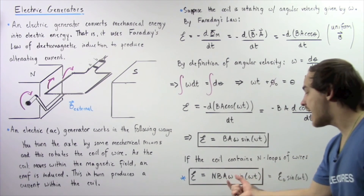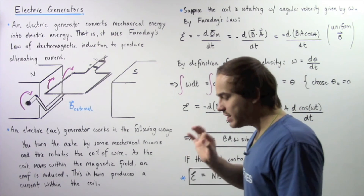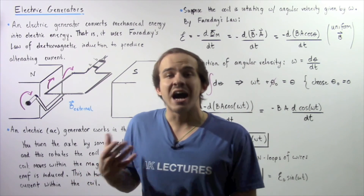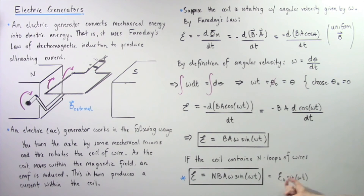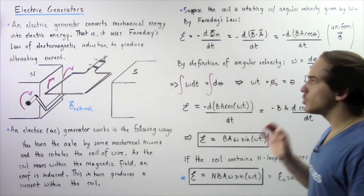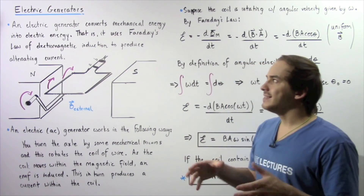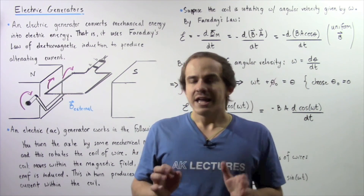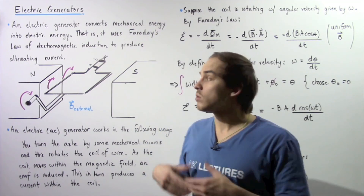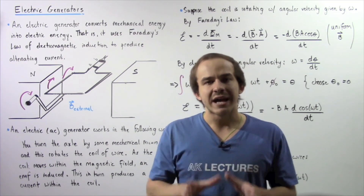The quantity N·B·A·ω is known as the amplitude voltage, or peak EMF — it is the highest value that the voltage attains, denoted E₀. This is the peak voltage produced by the AC generator. The entire purpose of an electric generator is to produce an alternating electric current by transforming mechanical energy into electric energy.